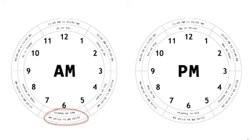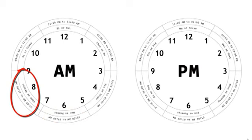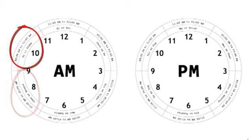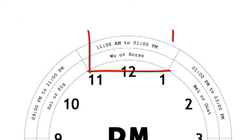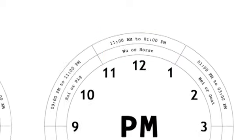Next is chen shi, or the dragon hour, between 7 am and 9 am, and si shi, or the snake hour, between 9 am and 11 am. Following si shi is wu shi, or the horse hour, between 11 am and 1 pm.